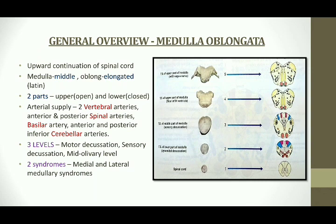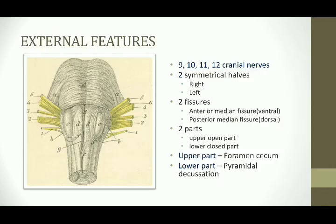It mainly has blood supply from four arteries: the vertebral arteries, the anterior and posterior spinal arteries, the basilar artery, and the anterior and posterior inferior cerebellar arteries. Two syndromes are associated with medullary lesions: the medial and the lateral medullary syndromes. The last four cranial nerves arise from the medulla.